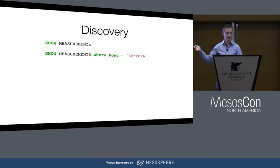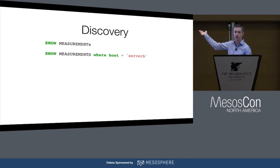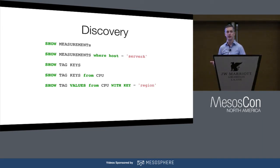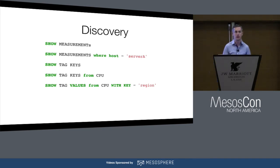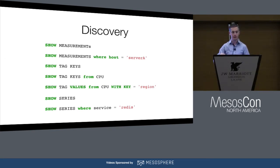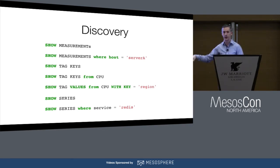Here we can see what measurements exist. We can see what measurements we have for one specific host, where host is a tag and server A is a tag value. We can see what tag keys we have, what tag keys we have on a specific measurement, and what tag values — for example, show tag values from CPU with key region shows us what regions we're collecting CPU values for. Show series gives all the underlying series, and you can filter down by tag key-value pairs and predicates.